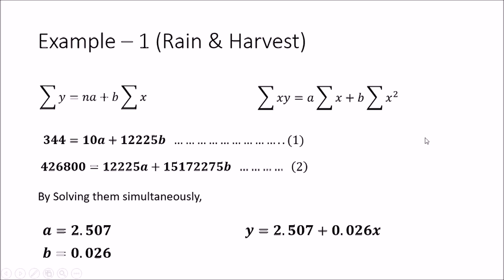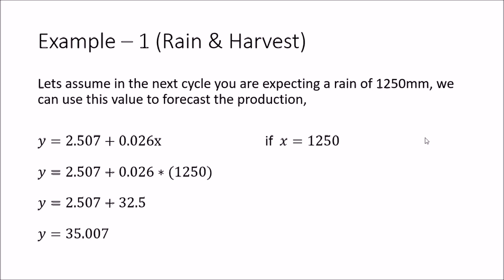Now we will do some forecasting using this regression equation. Let's assume in the next cycle you are expecting 1,250 millimeters of rain. We substitute this value into X and get the forecasted value of the harvest. After substituting, we finally get Y equals 35.007. So that will be the forecasted harvest for the next cycle if you have a rain of 1,250 millimeters.